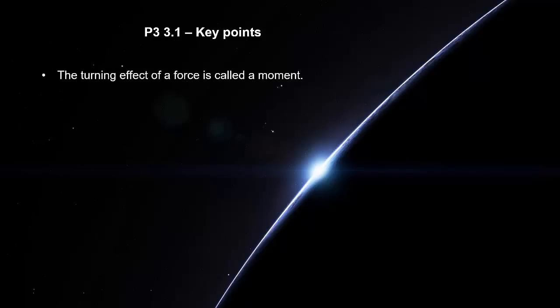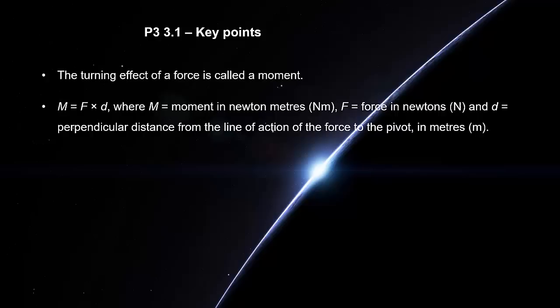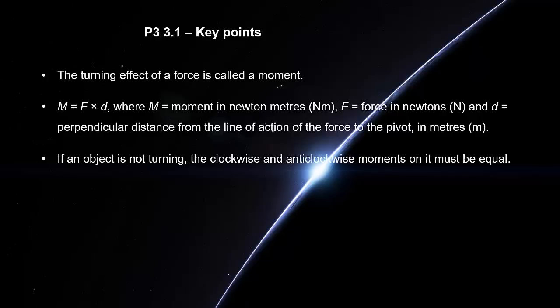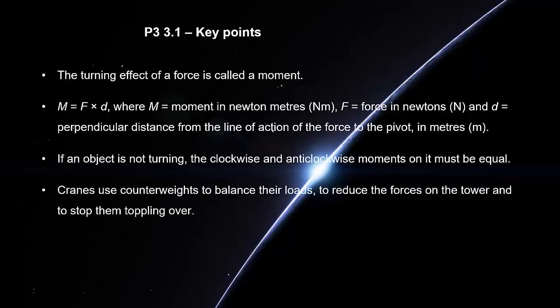The turning effect of a force is called a moment. M equals F times D. Moment equals force times perpendicular distance from the line of action of the force to the pivot. If an object is not turning, the clockwise and anti-clockwise moments on it must be equal. Cranes use counterweights to balance their loads, to reduce the forces on the tower and to stop them toppling over.